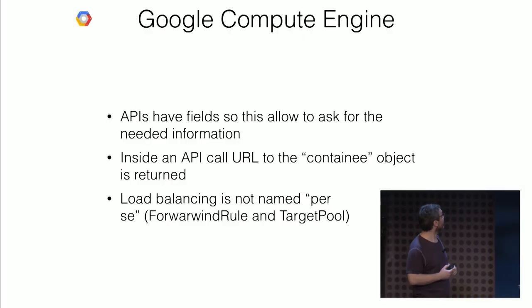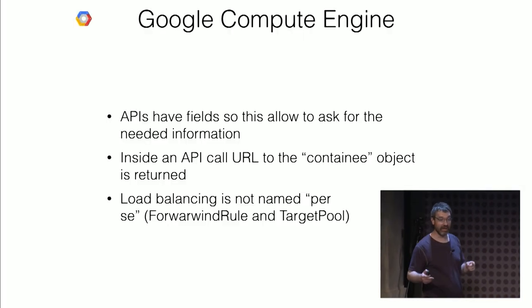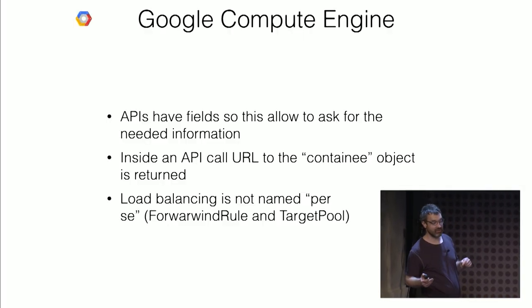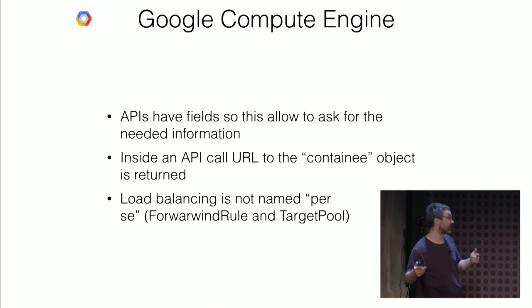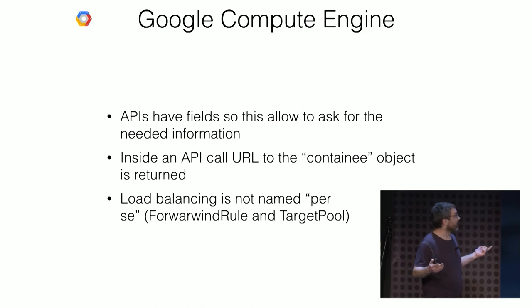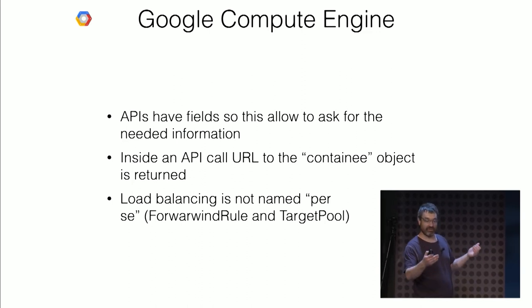And that's something good. They made something even better — they have an API with fields, so you can ask what you want to have returned as information for a given type of object. Inside the API, if you ask for an instance, you have a link to the volumes which are connected to the instance. A little vocabulary note: load balancing is named forwarding route and target pool, because basically you have the rule forwarding from load balancer to the instance and the pool which is connected.